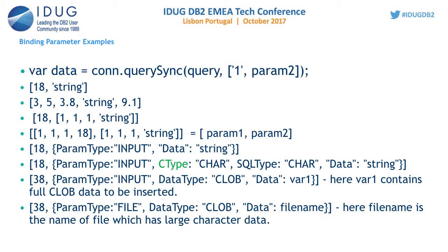More complex examples include passing a file name containing large character data for a CLOB column. You need to specify that your input data is of CLOB type using the appropriate paramType.